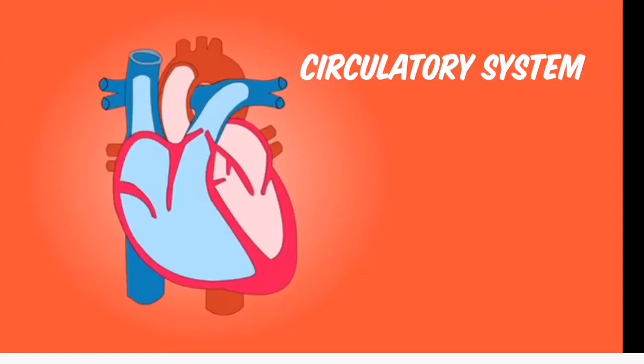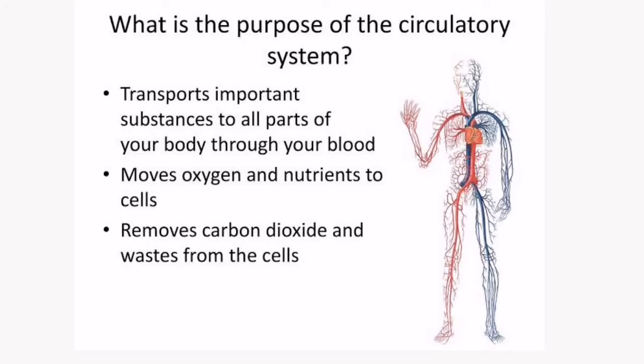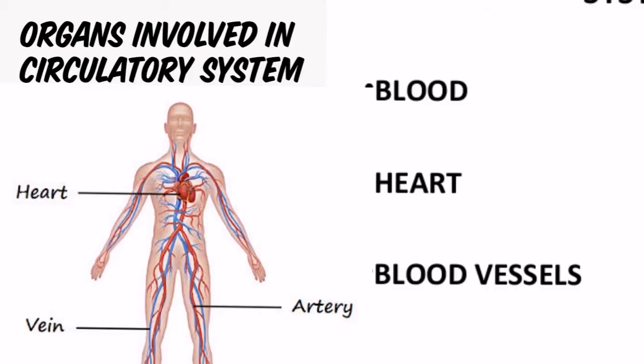Coming to the circulatory system — why is it called circulatory? Because it is circulating something, meaning it is transporting something. The circulatory system transports important substances to all the parts of our body through blood, moves oxygen and nutrients to cells, and also helps in removing carbon dioxide and wastes from the cells. The circulatory system is composed of heart, blood and blood vessels.